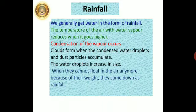The next form of precipitation is rainfall. We generally get water in the form of rainfall. The temperature of the air with water vapor reduces when it goes higher. Condensation of the vapors occurs. Clouds form when the condensed water droplets and dust particles accumulate. The water droplets increase in size. When they cannot float in the air anymore because of their weight, they come down as rainfall.